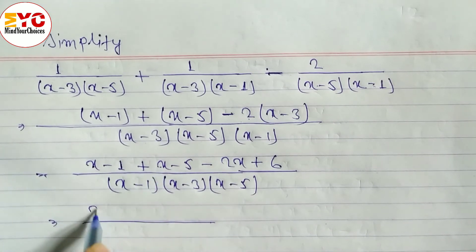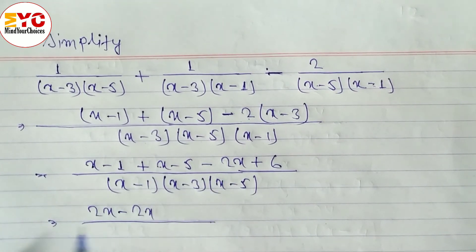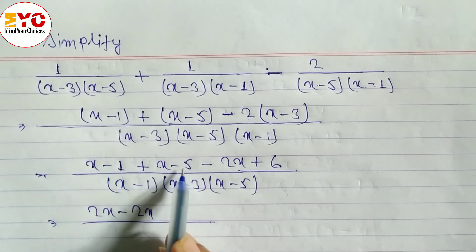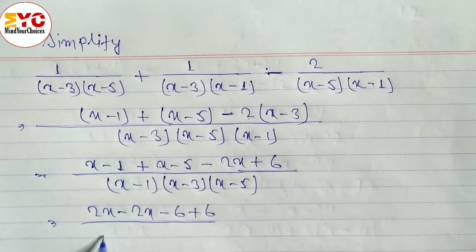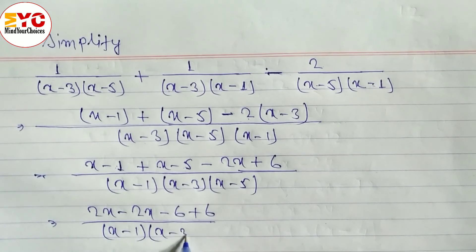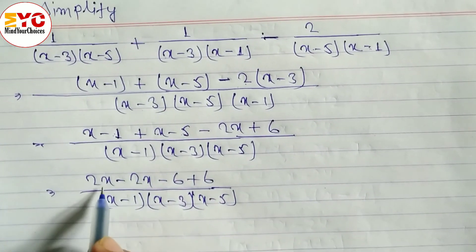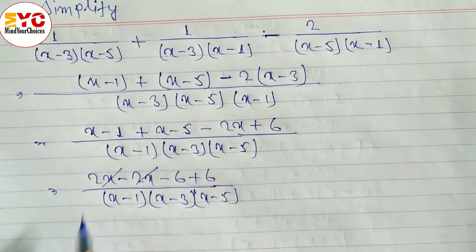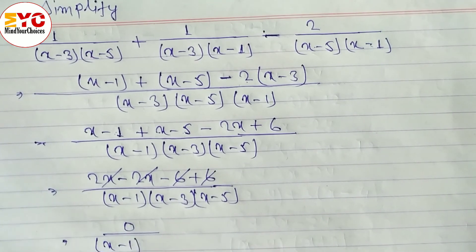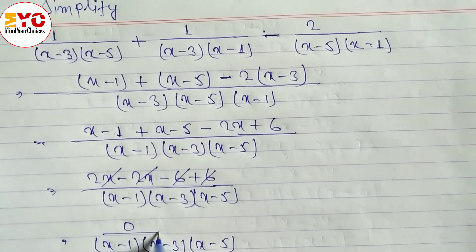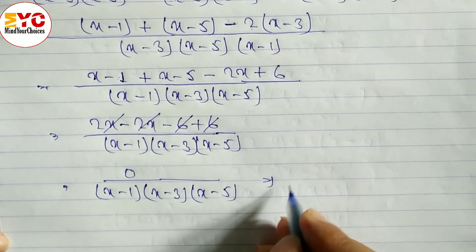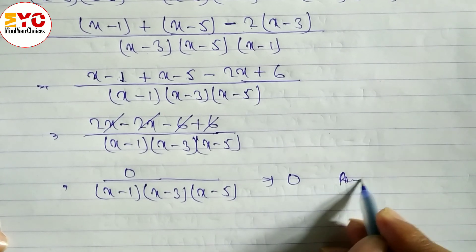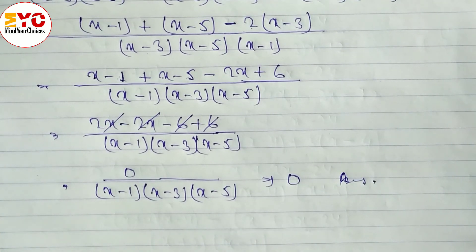Opening the brackets: (x minus 1) plus (x minus 5) minus 2(x minus 3) gives x minus 1 plus x minus 5 minus 2x plus 6. The x terms: x plus x minus 2x equals 0. The constants: minus 1 minus 5 plus 6 equals 0. The numerator is 0, so the answer is 0 over (x minus 1)(x minus 3)(x minus 5), which equals 0.